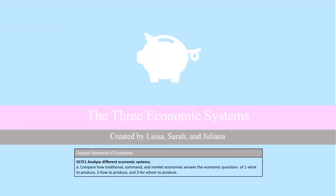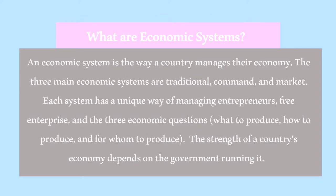The three economic systems, by Luisa, Sarah, and Juliana. An economic system is defined as the way a government and country manages the economy. Each system has a unique way of managing free enterprise, entrepreneurs, and the three economic questions: what to produce, how to produce, and for whom to produce. The three main economic systems are traditional, market, and command.